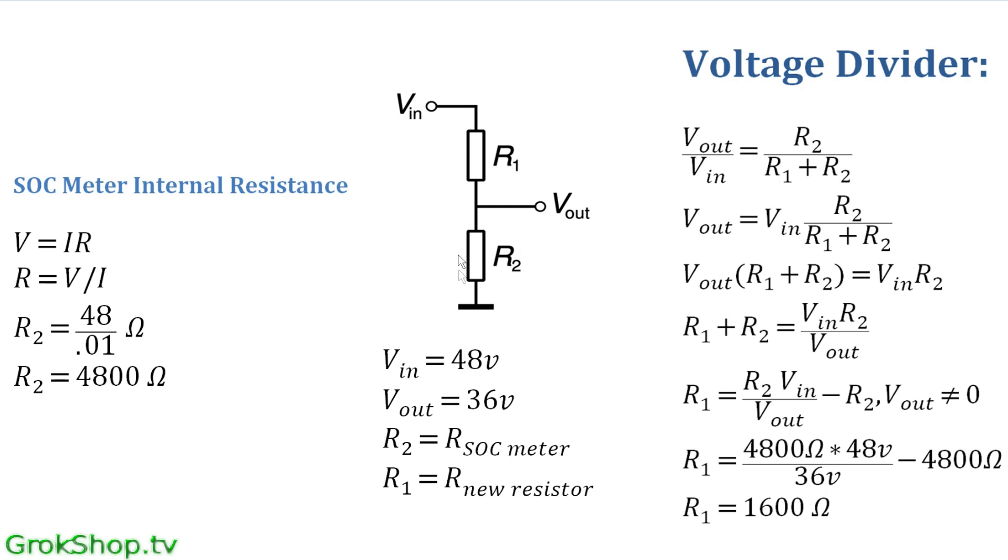R2 is the internal resistance of the state of charge meter—we don't know that to start with. And R1 is the new resistor value, and that's really what we're looking for. So we just really need to figure out R2, and that's what I did over here with this state of charge meter internal resistance. So I just use Ohm's law and I take a measurement.